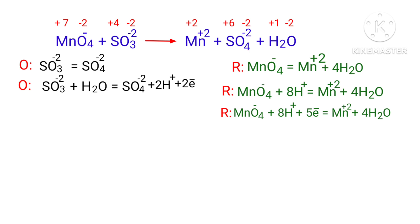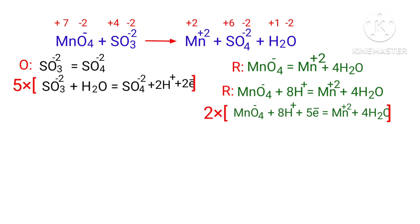Make electron gain equivalent to electron loss. The electrons lost in the oxidation half-reaction must equal the electrons gained in the reduction half-reaction. The oxidation half-reaction has 2 electrons and the reduction has 5. To equalize, multiply the oxidation half-reaction by 5 and the reduction half-reaction by 2.